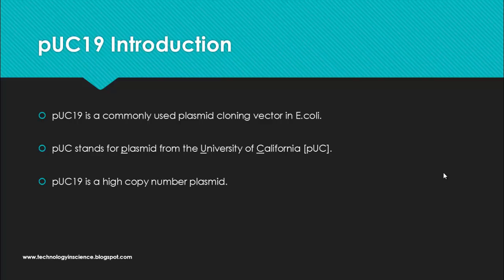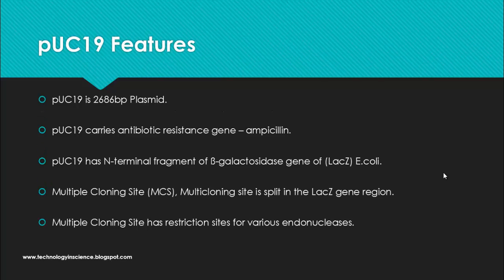PUC19 is a high copy number plasmid. It is 2686 base pairs in size and carries an antibiotic resistance gene for ampicillin, which is very useful for selective screening after transformation. Transformants carrying the PUC19 vector can grow on ampicillin plates. PUC19 also has the N-terminal fragment of the beta-galactosidase gene, lacZ, and a multiple cloning site.